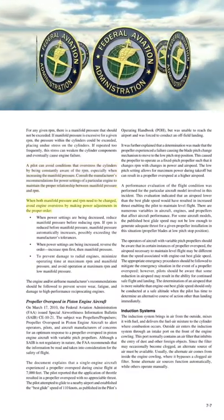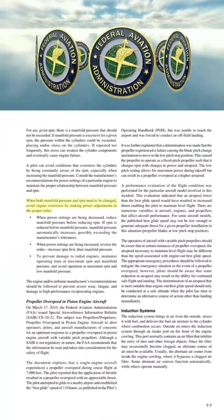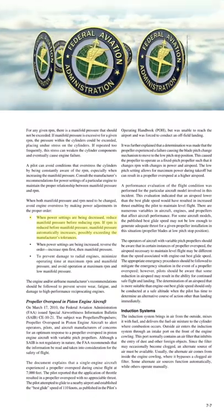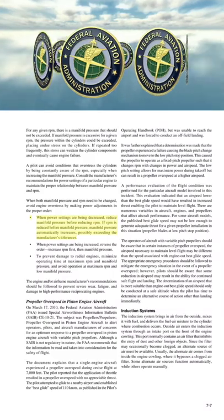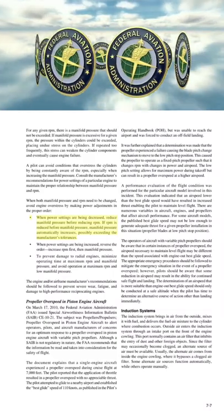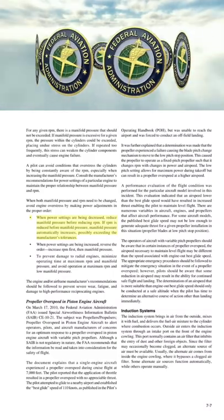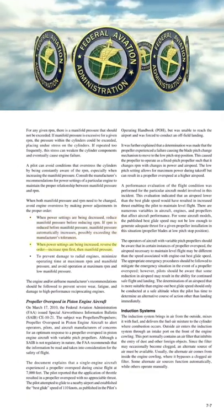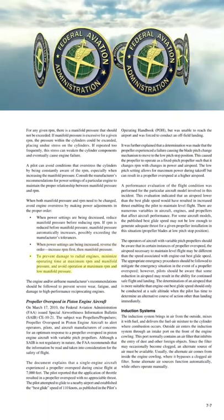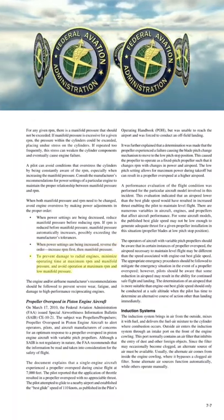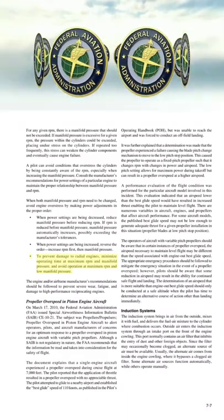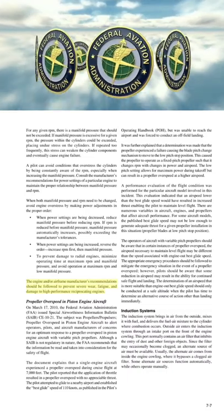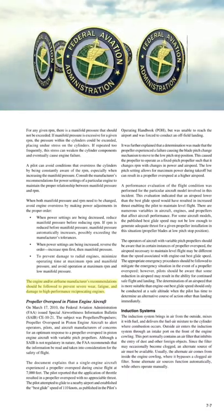A pilot can avoid overstressing the cylinders by being constantly aware of RPM, especially when increasing manifold pressure. When both manifold pressure and RPM need to be changed, make power adjustments in the proper order. When decreasing power, reduce manifold pressure before reducing RPM. If RPM is reduced before manifold pressure, manifold pressure automatically increases, possibly exceeding manufacturer's tolerances. When increasing power, reverse the order: increase RPM first, then manifold pressure. To prevent damage to radial engines, minimize operating time at maximum RPM and manifold pressure, and avoid operation at maximum RPM with low manifold pressure.